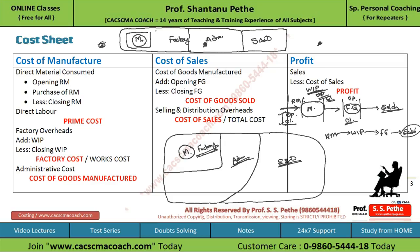Now with this background, let's understand the terms of the cost sheet. First, we look at the cost of manufacture. When you manufacture a particular good, you first take the direct material consumed and direct labor. These two components together form the prime cost — prime cost means the main cost.